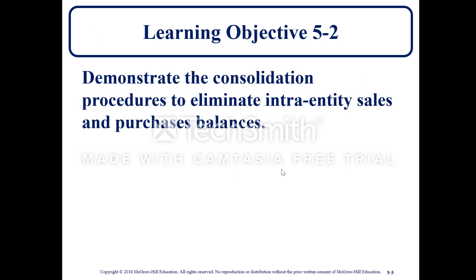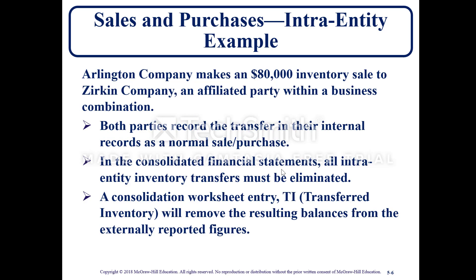Learning Objective 5-2: Demonstrate the consolidation process to eliminate intra-entity sales and purchase balances. Arlington Company makes an $80,000 inventory sale to Zerkin Company, an affiliated party within a business combination. Both parties record the transfer in their internal records as a normal sale or purchase.